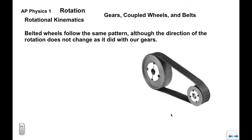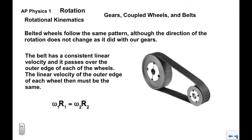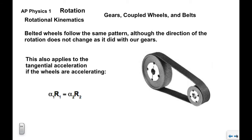Belted wheels follow the same pattern, although the direction of rotation does not change — both wheels rotate in the same direction. The belt passes over both wheels with a constant linear velocity and does not slip. Therefore ω₁r₁ = ω₂r₂, just as with gears. This relationship also extends to tangential acceleration: α₁r₁ = α₂r₂.